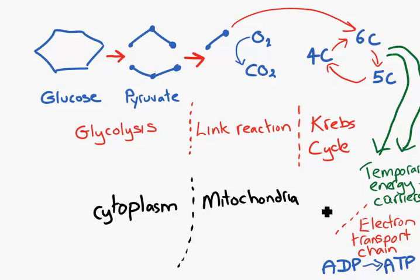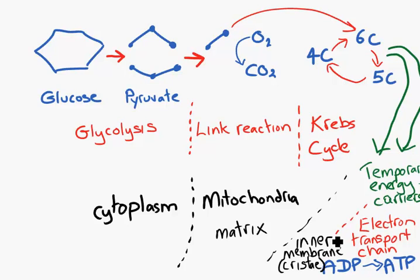The link reaction and the Krebs cycle occur just in the matrix of the mitochondria, while the electron transport chain occurs on the inner membrane, which is also called the cristae. So that is a brief overview of respiration without any of the details that you will need for higher-level IB biology.